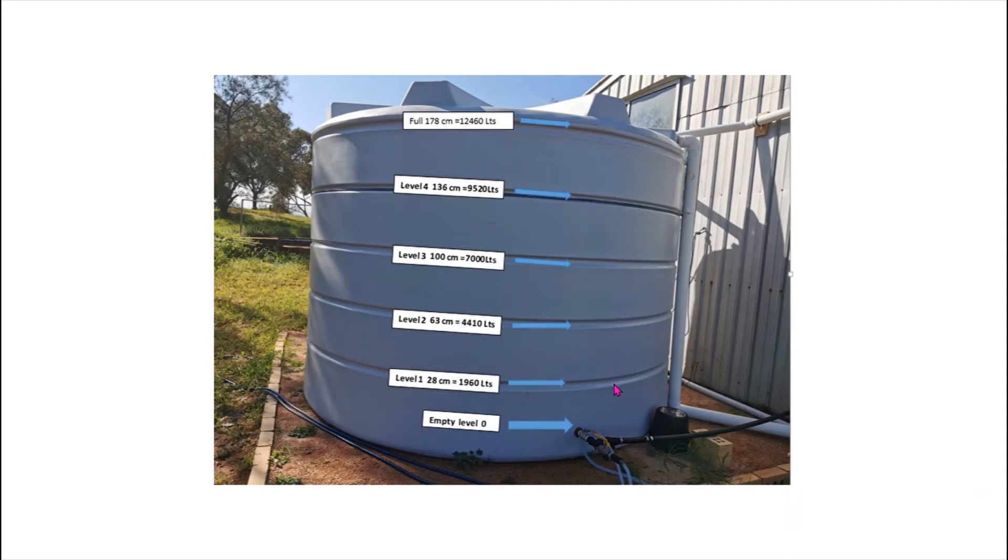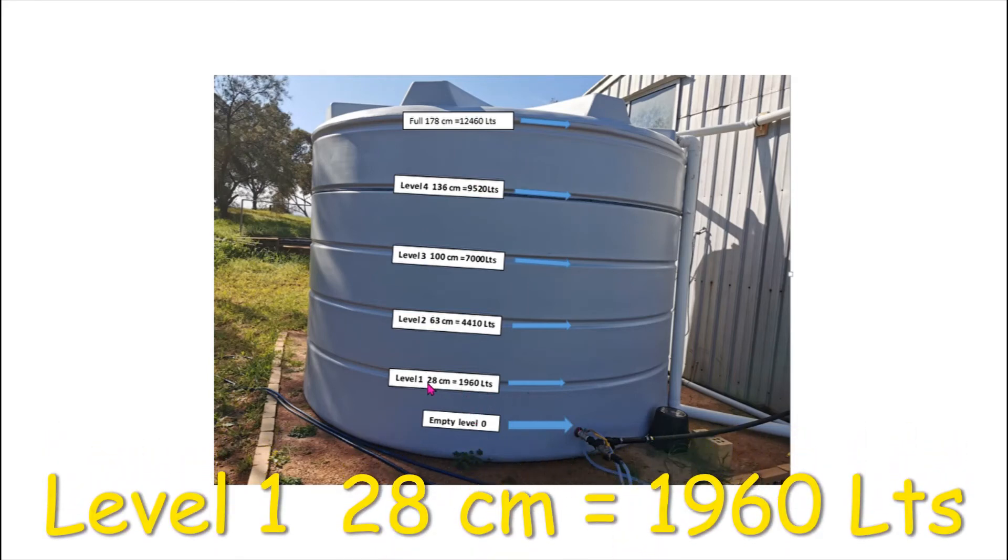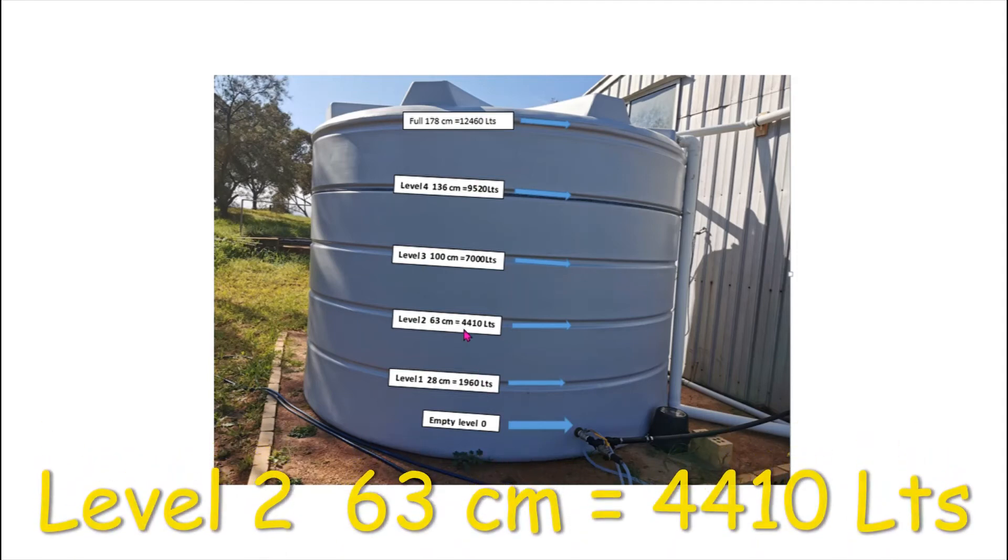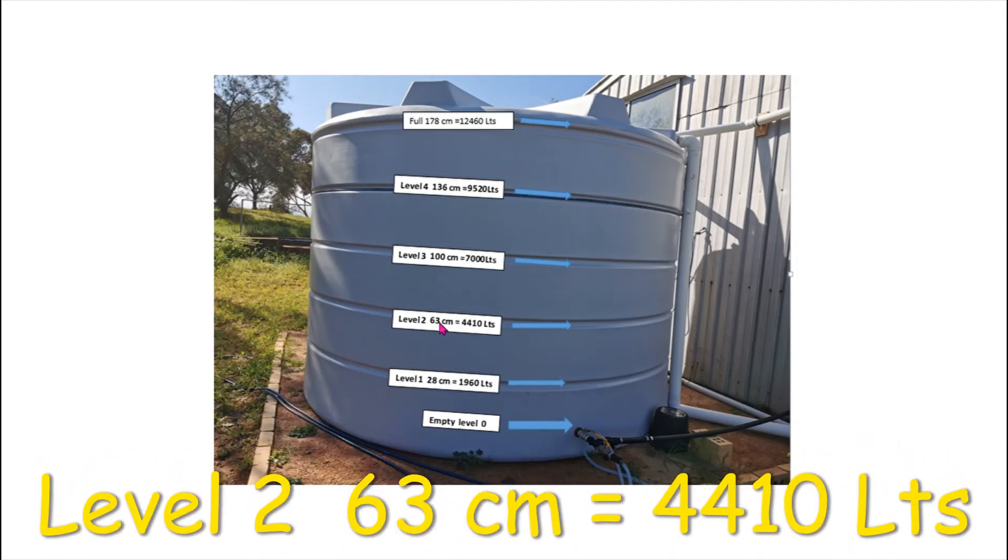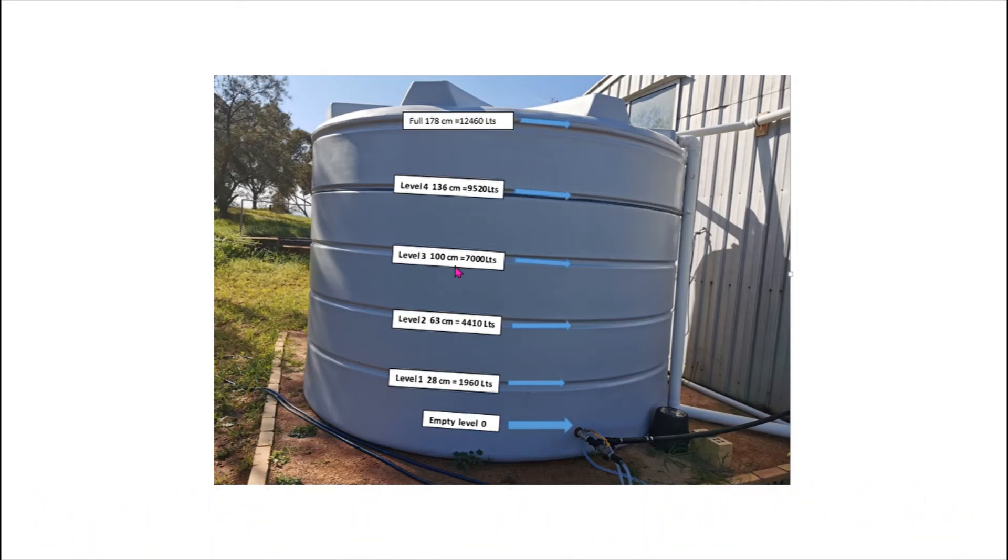So the first level is the top of the tap, which is zero—there's no liters there. Then we've got 28 centimeters times 70, and that gives us 960 liters for level one. Level two is 70 times 63 centimeters, that gives us 4,410, and then so on.